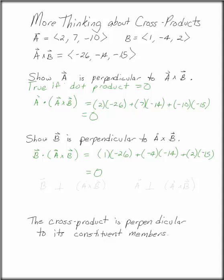B is perpendicular to A cross B, and A is perpendicular to A cross B. It's always true. The cross product is perpendicular to its constituent members.